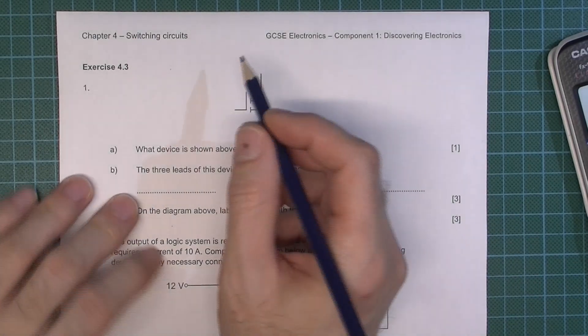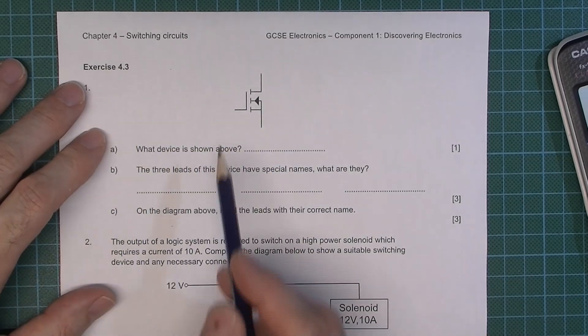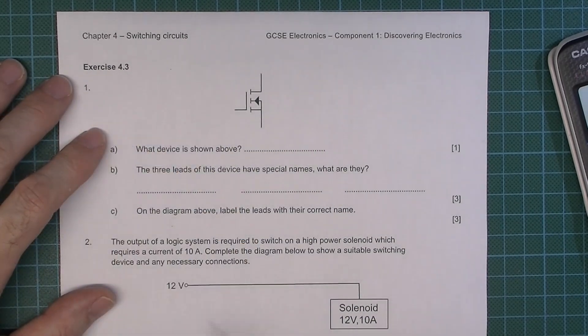OK, I'm just going to quickly run through the answers to this. It's chapter 4 switching circuits and we're looking at MOSFETs. This is exercise 4.3.